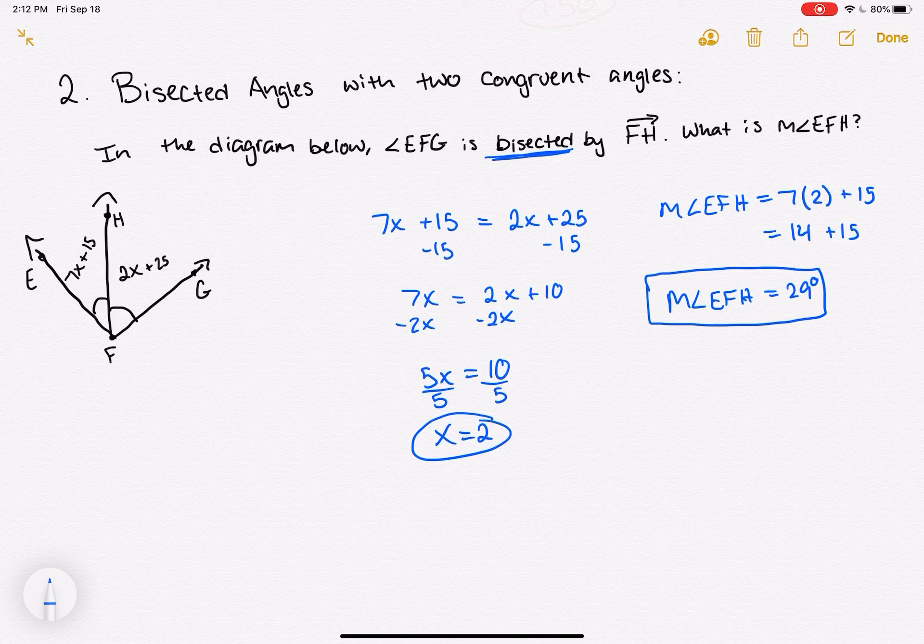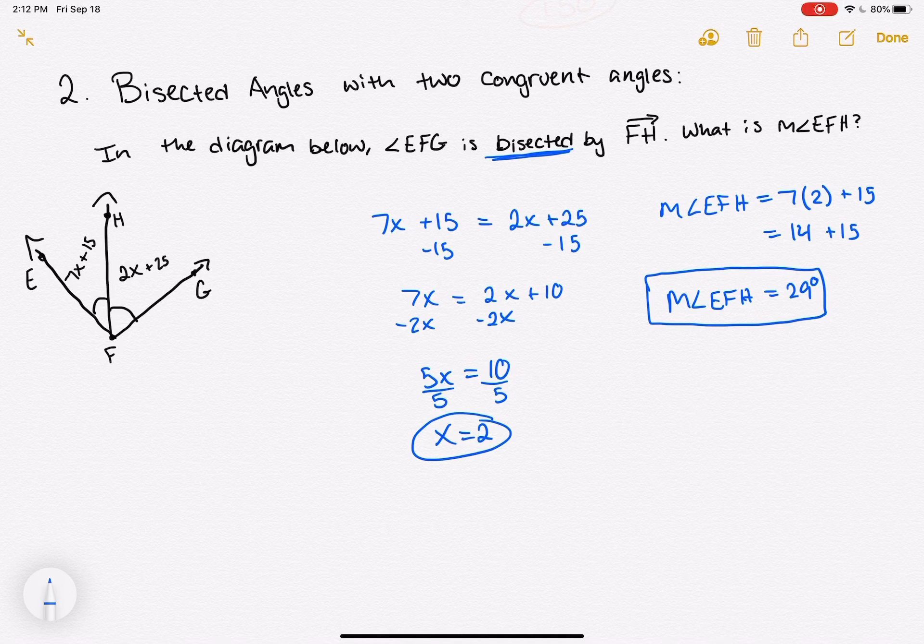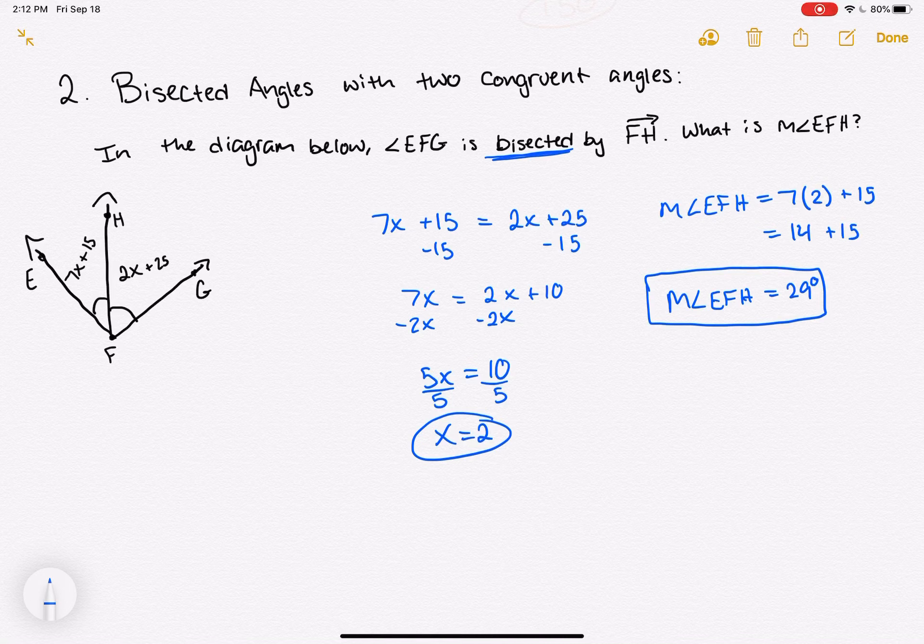If you want to check that that is correct, the best option at this point is to take your x and plug it into the other angle measure. So you'd have 2 times 2 is 4, plus 25 is 29. Both angles equal 29 degrees. So you are correct in your answer of 29 degrees because both of the congruent angles have the same measure.